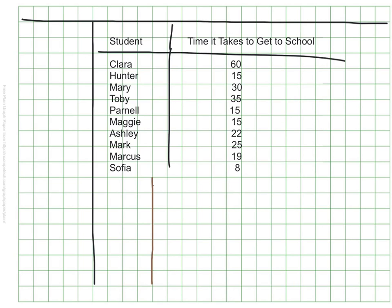For this data, the stem is going to be the tens digits of all of the numbers in my data. The times go from a shortest time of eight minutes to the longest time of 60 minutes. So my tens digits need to go from zero — there's no tens digit for eight — all the way up to six. My stem will count from zero to six, and these each represent a group of tens: we can have responses in the tens, twenties, forties, sixties.